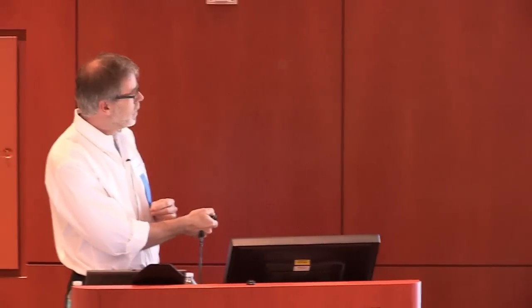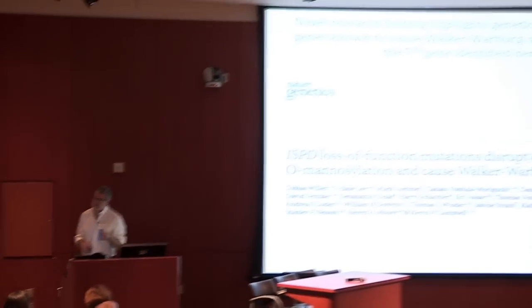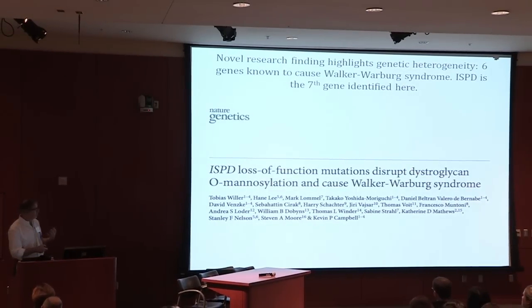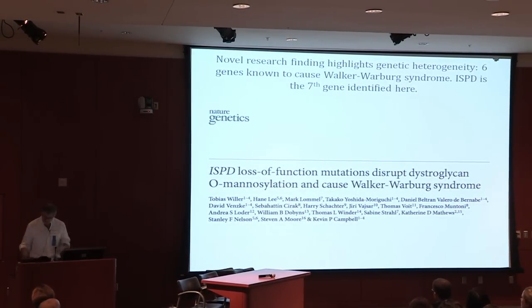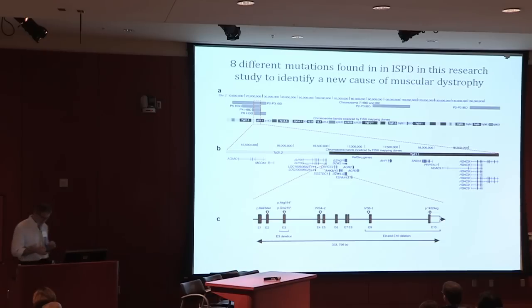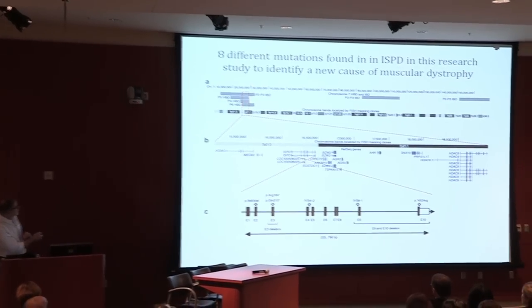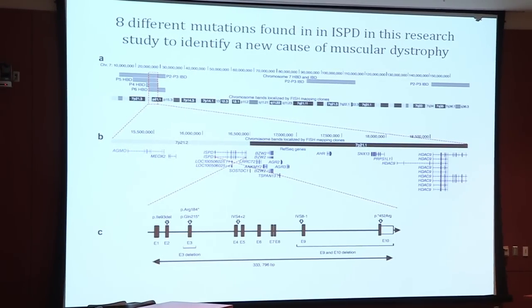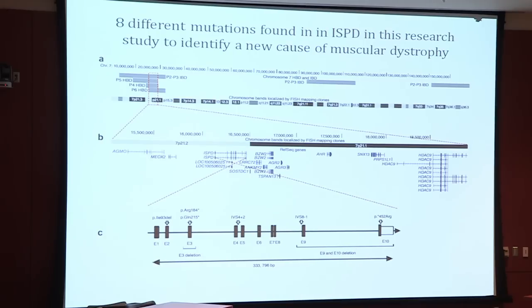The final item I'd touch on is a research finding that Hane Lee did in collaboration with Tobias Willer, a postdoc in Kevin Campbell's lab with Stephen Moore at the University of Iowa. She identified ISPD loss-of-function mutations as a novel genetic cause of Walker-Warburg syndrome, which is an alpha-dystroglycanopathy affecting O-mannose glycosylation. It went through fairly standard fashion: Hane was able to do linkage and identify a subset of patients linked to a given region, within which were multiple independent recessive mutations in ISPD — clear, compelling evidence.